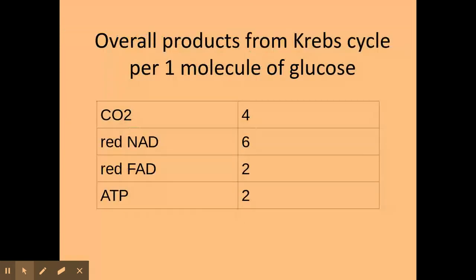As with all stages in respiration, you need to be aware of what is produced at each stage per one molecule of glucose. Because the Krebs cycle happens twice per one molecule of glucose, you get four lots of carbon dioxide, six lots of reduced NAD, two lots of reduced FAD, and two lots of ATP made through substrate level phosphorylation.